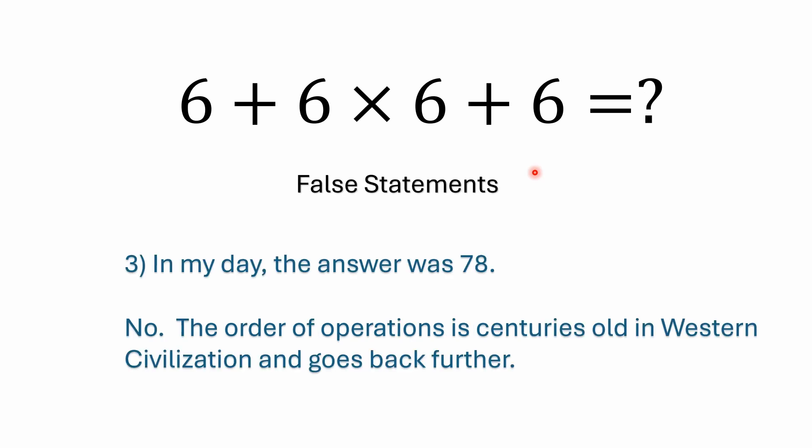And then the other famous one: 'In my day the answer was 78 — you just solved left to right.' The order of operations is centuries old in western civilization; you can date it back to early books in the 1500s, and I'd say it goes back even further than that. Take the formula for the area of a circle: A = πr². You solve the exponent r² before you multiply by π — you always see it written A = πr², yet you do the exponents before the multiplication. That's because exponents have precedence over multiplication, and that formula has been around for a very long time. So no, it was never 78.